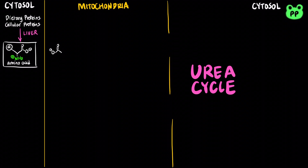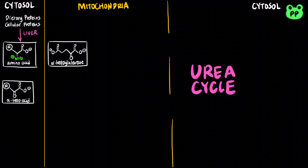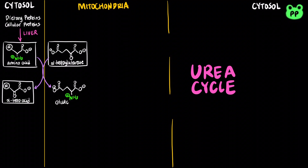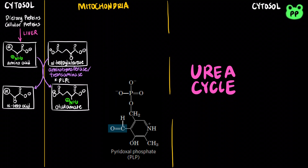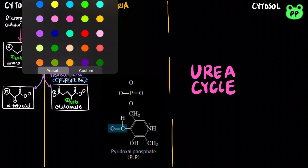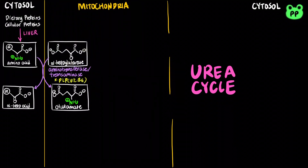In the cytosol of liver cells, amino groups from most amino acids are transferred to alpha-ketoglutarate to form glutamate by the enzyme aminotransferase, also known as transaminase, which requires the cofactor pyridoxal phosphate, or PLP, from vitamin B6.